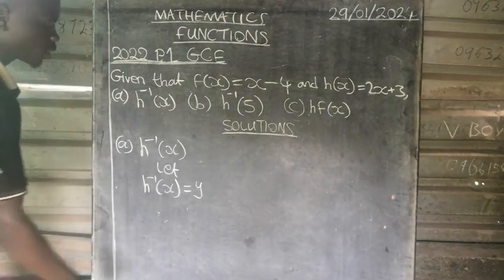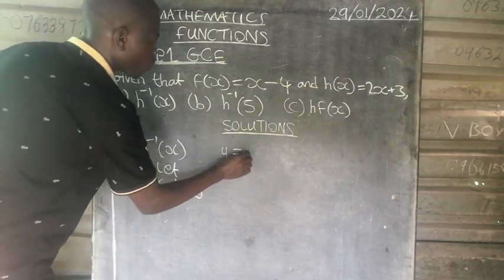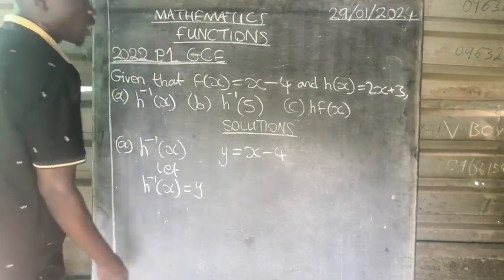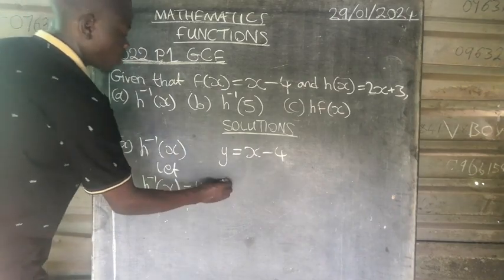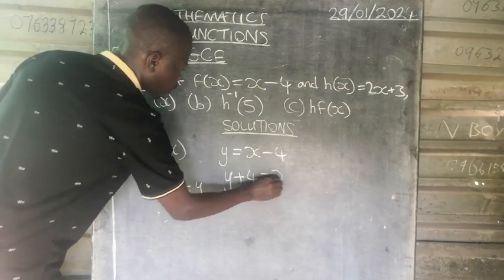Which means our function will be y equals 2x plus 3. Then we make x subject of the equation by taking negative 3 to the other side and dividing by 2, which gives us x equals y minus 3 over 2.